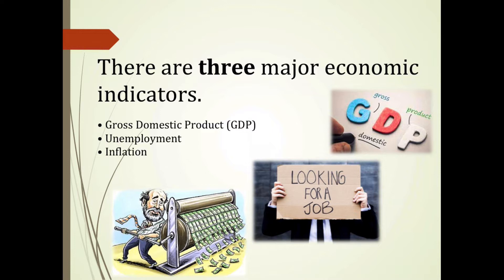Unemployment is defined by the Bureau of Labor Statistics as the percent of people who do not have a job, have actively looked for work in the past four weeks, and are currently available for work. Also, people who were temporarily laid off and were waiting to be called back to that job are included in the unemployment percent.